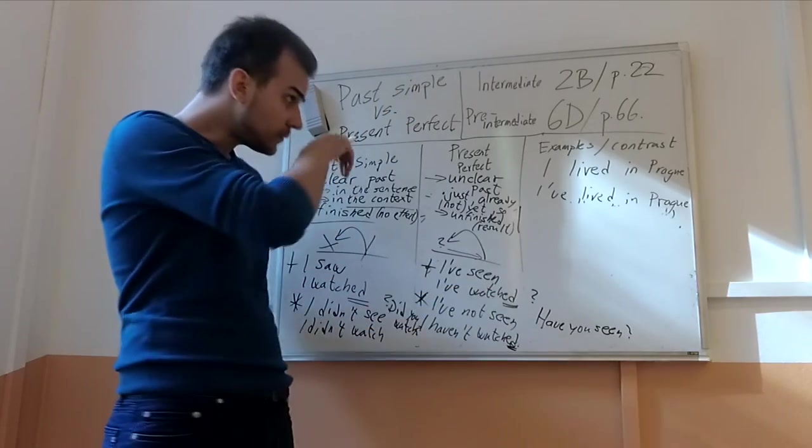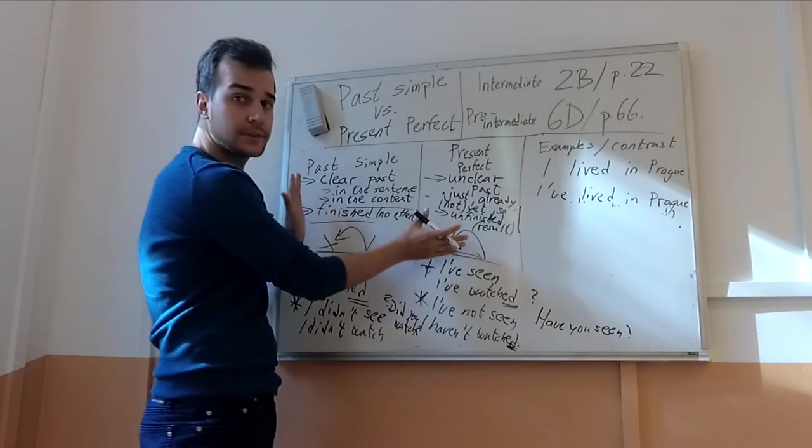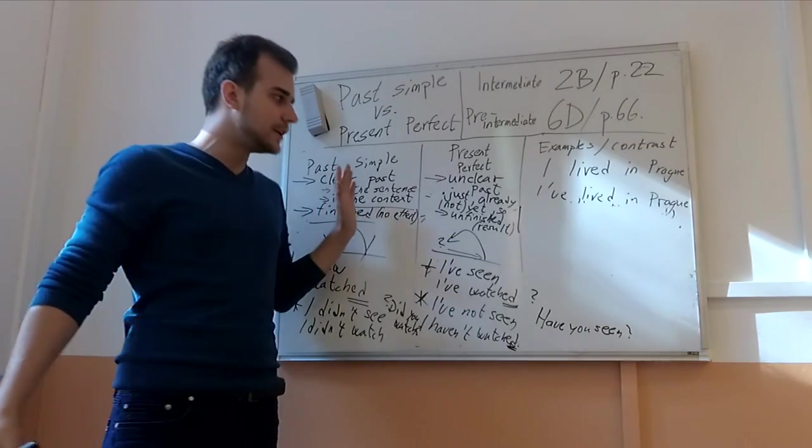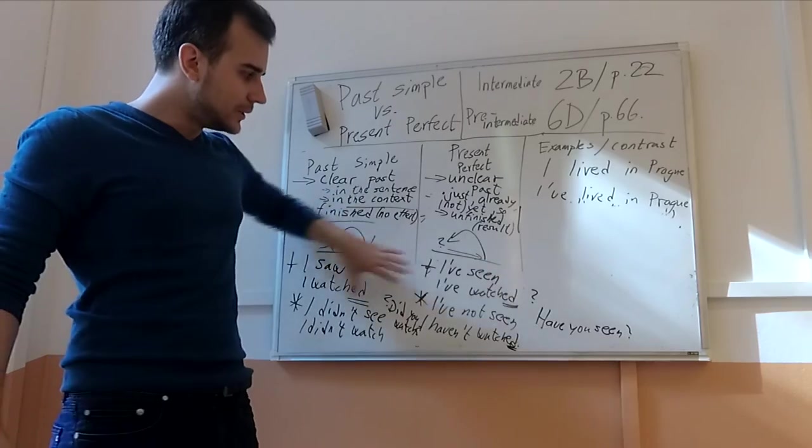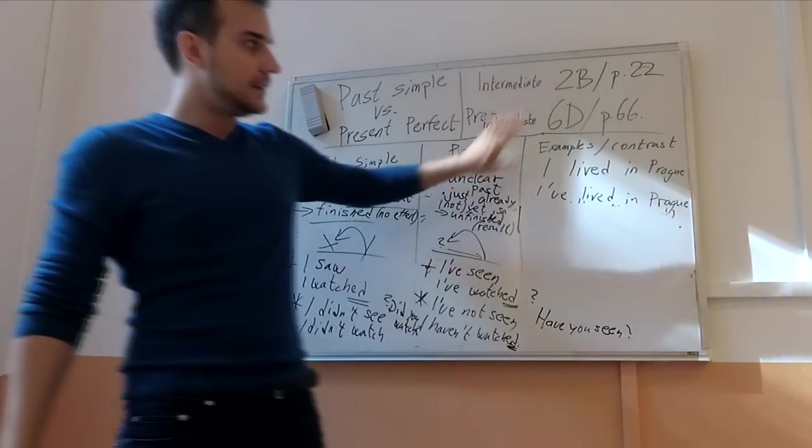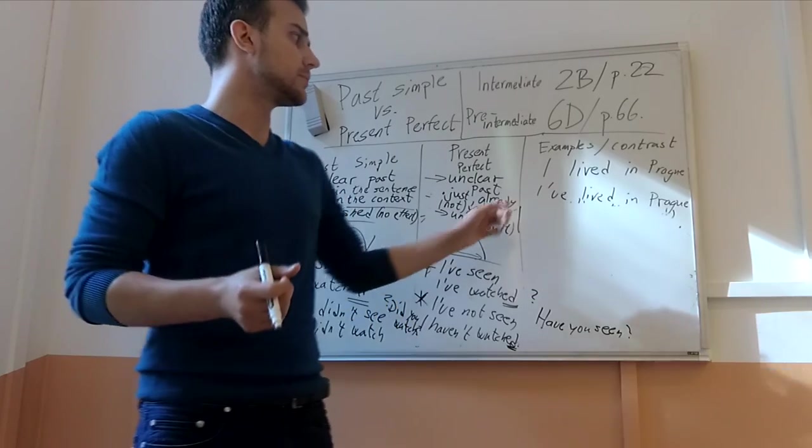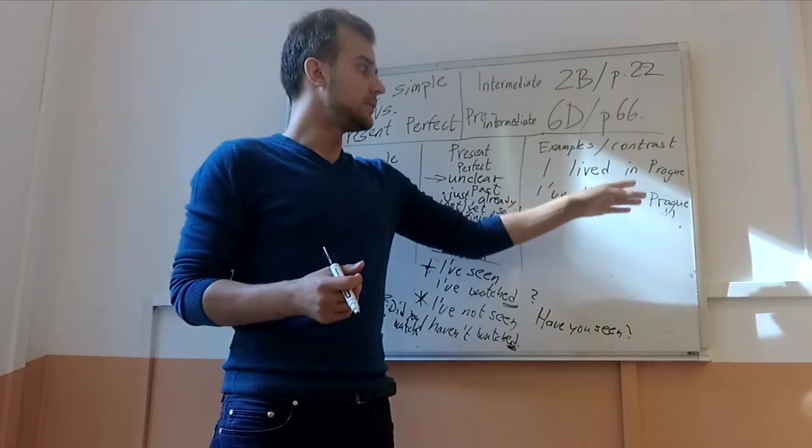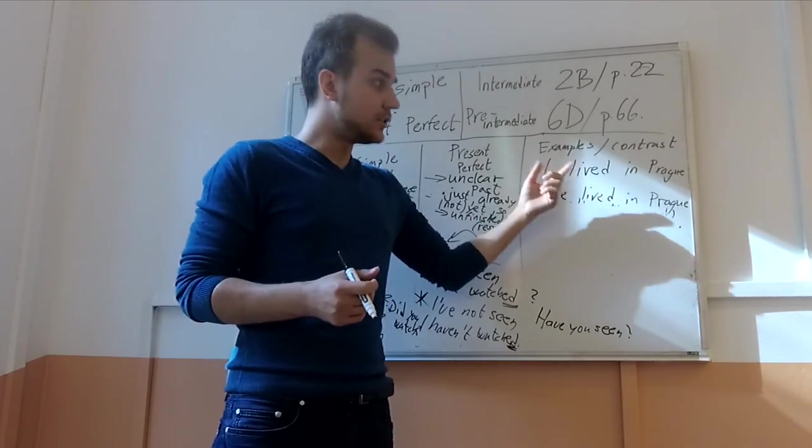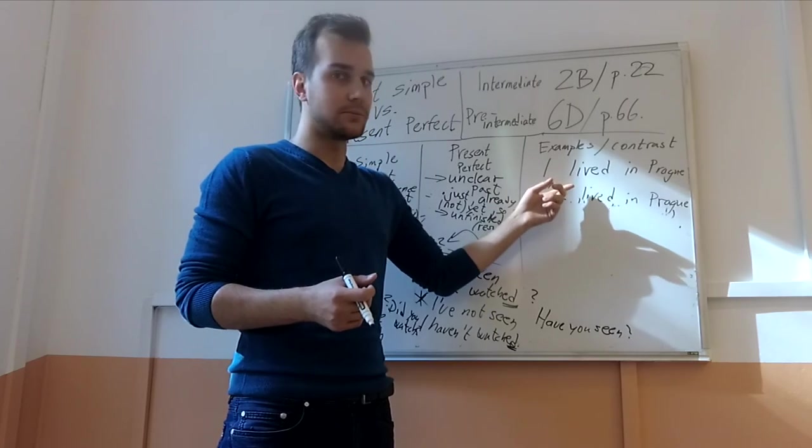So we know the context, this is the situation when I use this. Then we know the form. And here were some examples. Let me give you a few more examples so we can practice again. I lived in Prague, I don't live there right now. If I say I lived in Prague, my action of living there is finished.